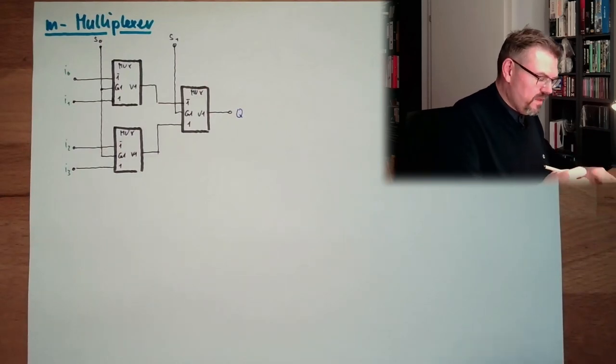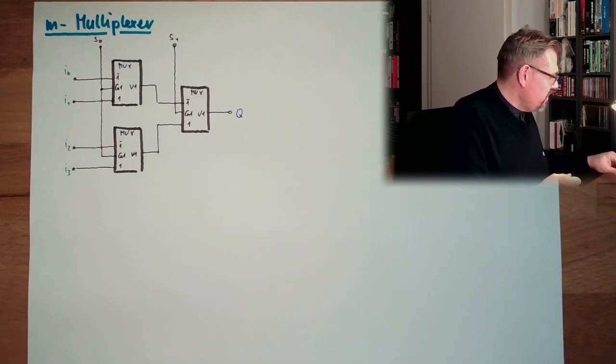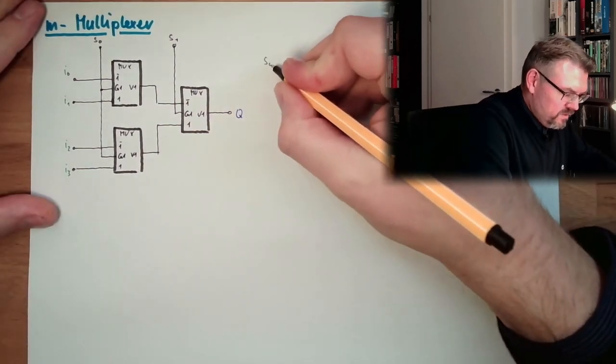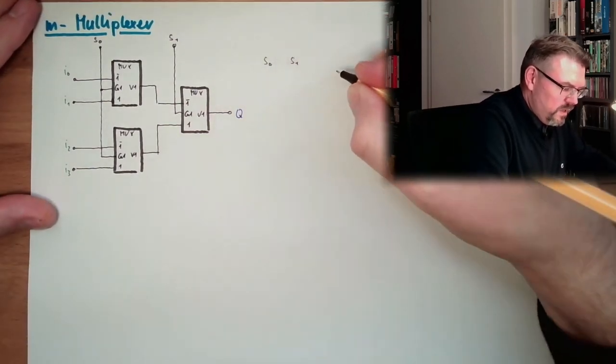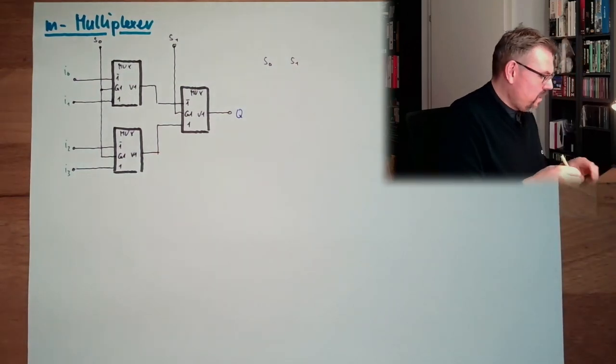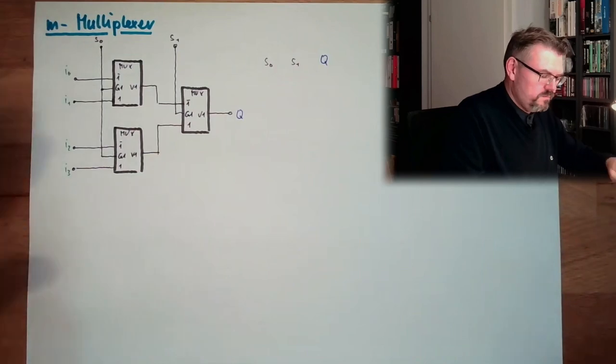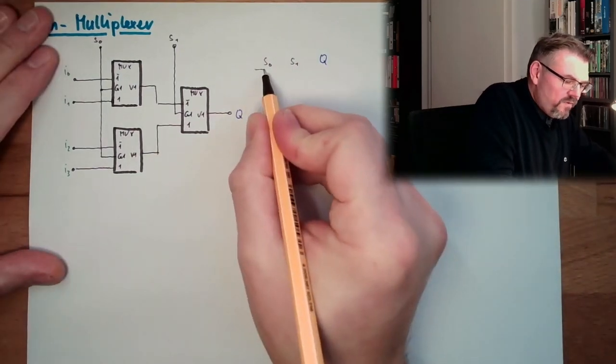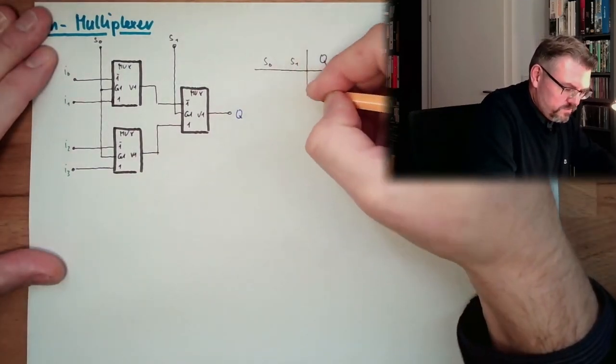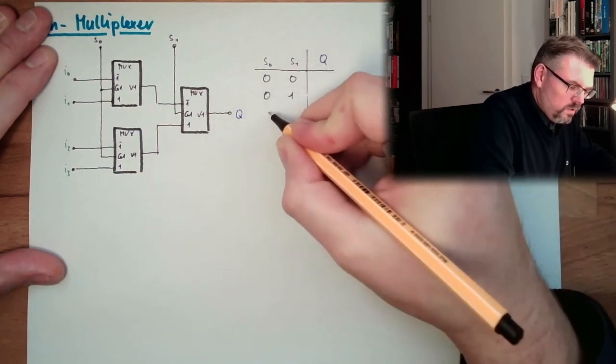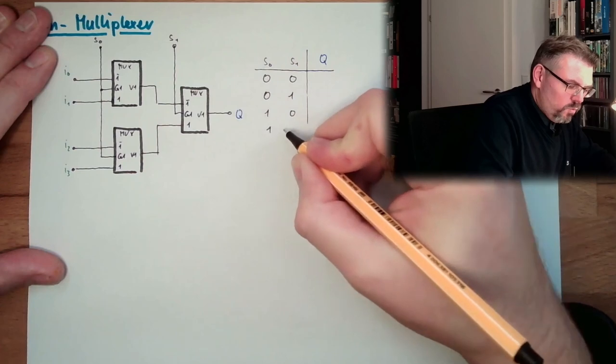So let's think about what we have if we have somewhere S0, S1, and here we write down which signal we are reaching at Q. So let's have a look at all possible combinations. So we have 00, 01, 10, 11.